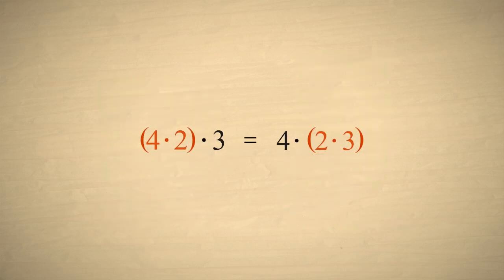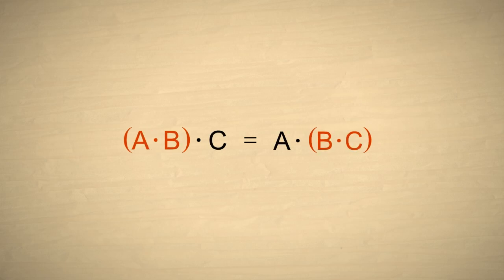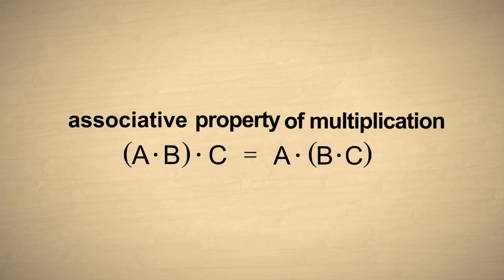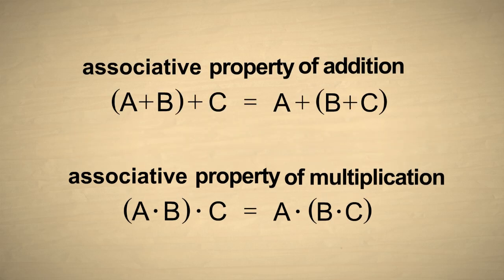If we use the letters A, B, and C instead of numbers, then we can write this property in a more general way. So the associative property applies to both addition and multiplication.